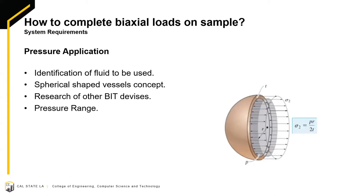In order to create the bubble inflation device, it was necessary to identify the best fluid to be used in the system as well as a method to calculate the pressure requirements. The use of air as the fluid was rejected mainly due to its high compressibility and its variation with temperature, so water was selected for the system due to its incompressibility, low cost, and low viscosity. For the pressure requirements, we considered the concept of spherical shaped vessels, specifically a thin wall vessel where the ratio of radius over thickness is greater than 10, which has been the case for our samples.